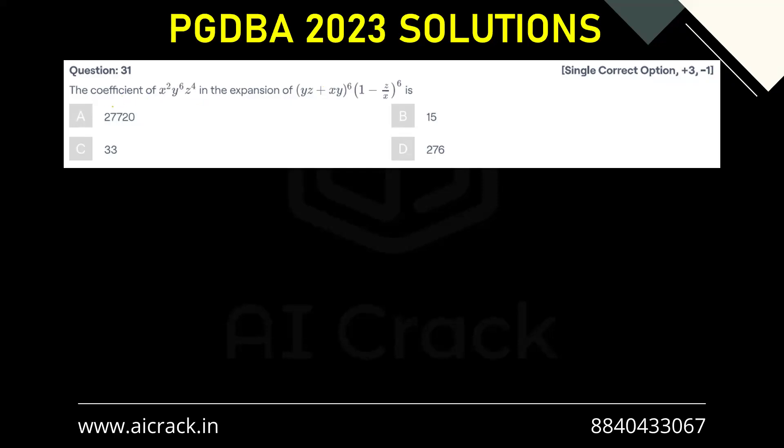Let's solve question number 31. The coefficient of x²y⁶z⁴ in the expansion of (yz + xy)⁶ multiplied by (1 - z/x)⁶.